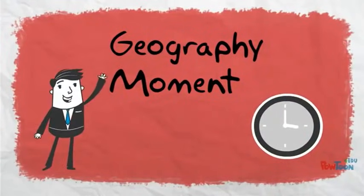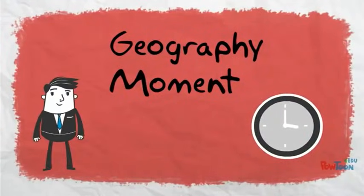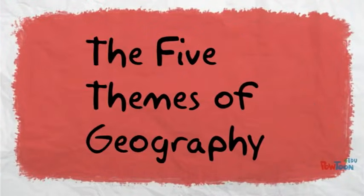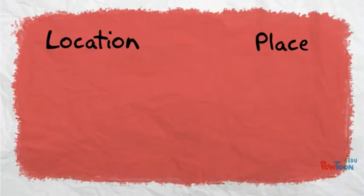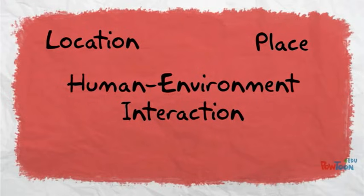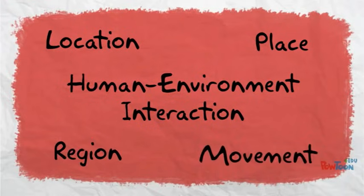Here's a geography moment. What are the five themes of geography? In no order, they are location, place, human-environment interaction, region, and movement.